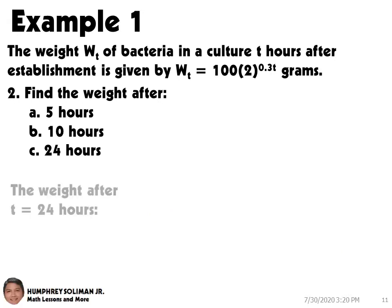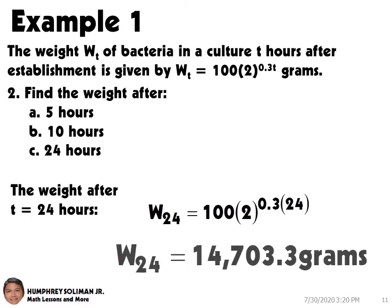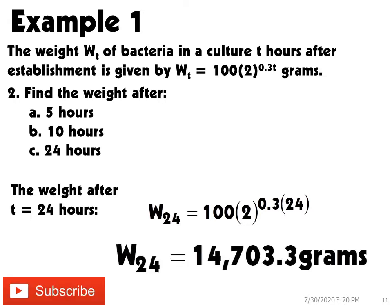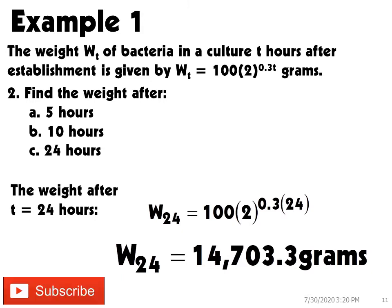Next, in number 2c, the weight after 24 hours is when t equals 24. So if we substitute t equals 24 in the equation used to model the weight of the bacteria, we will get W24 equals 100 times 2 raised to 0.3 times 24. Therefore, the weight after 24 hours is W24 equals 14,703.3 grams.